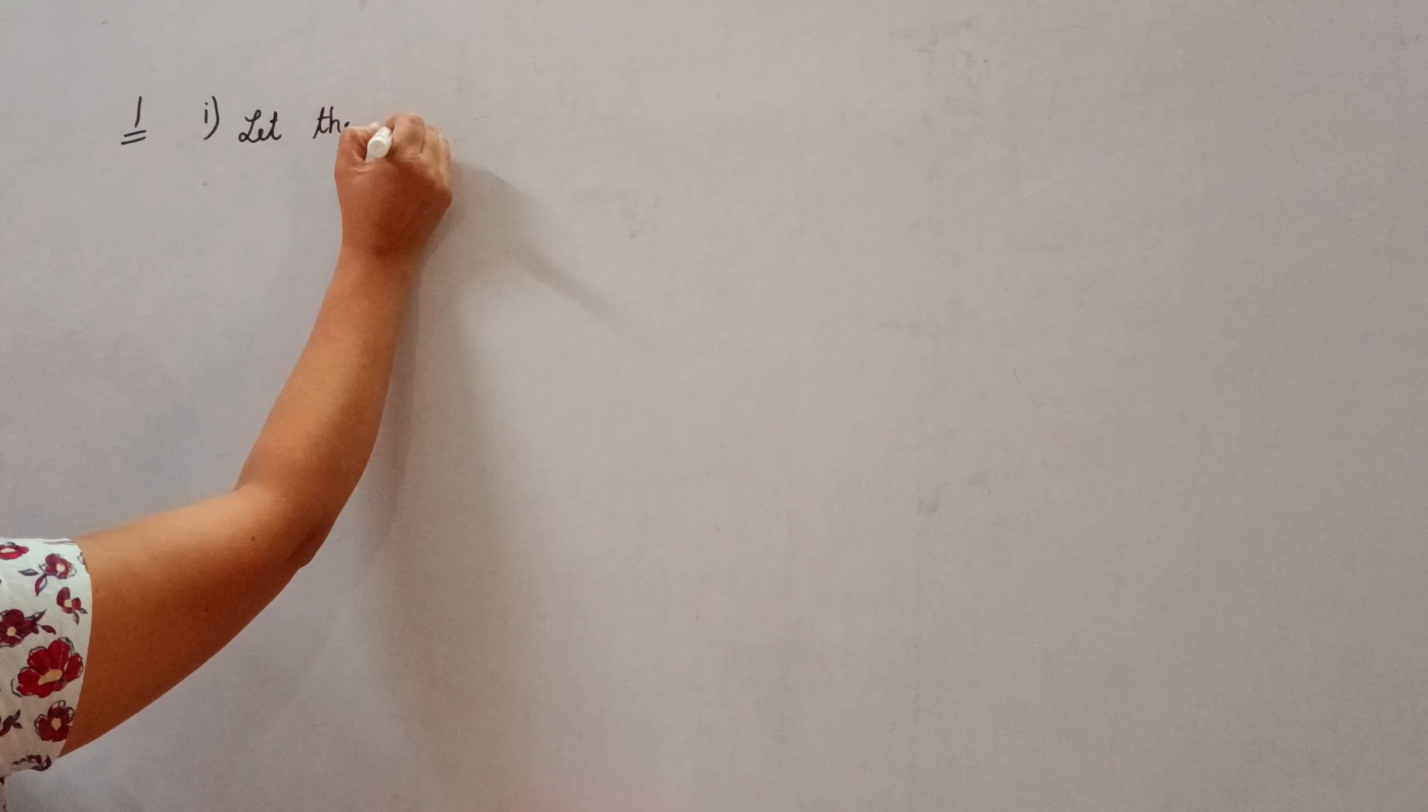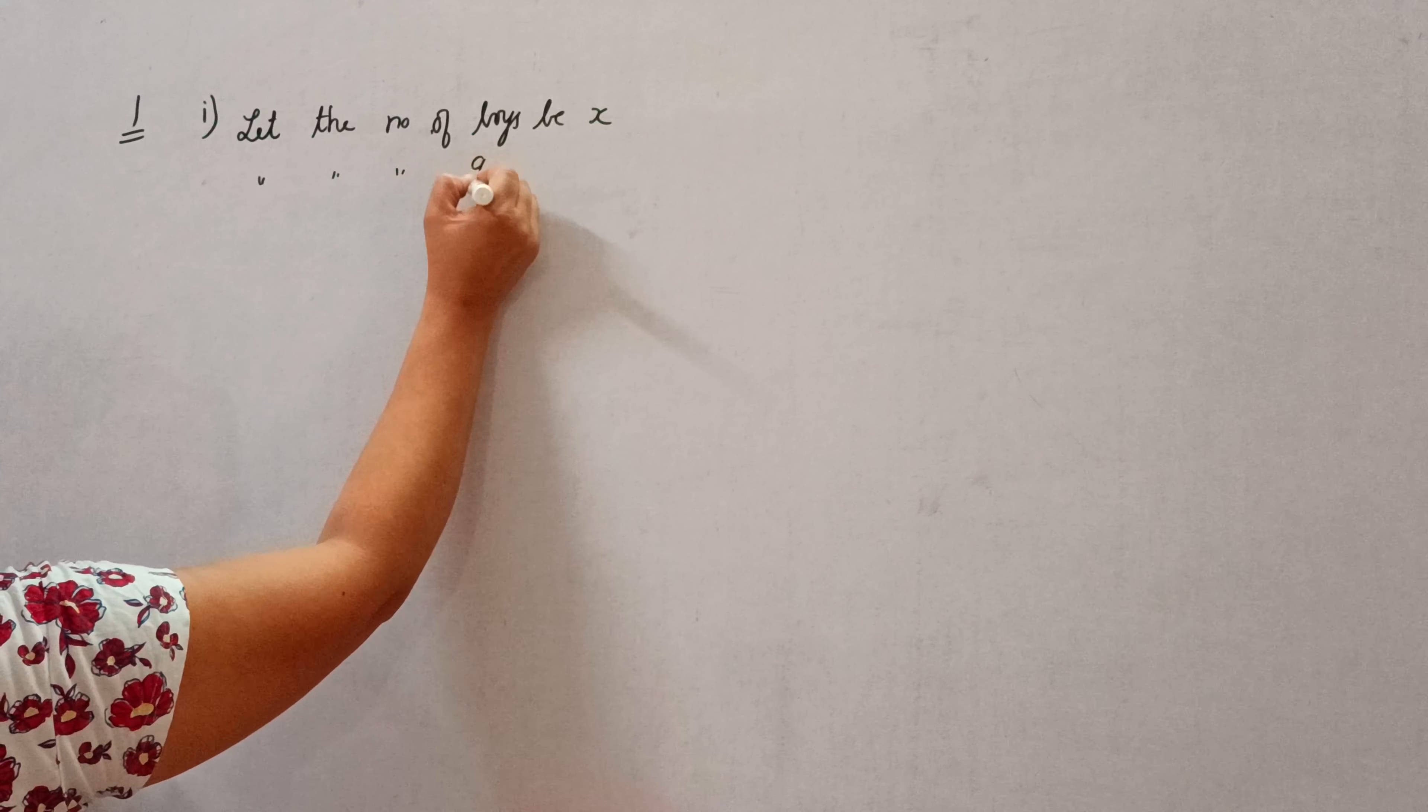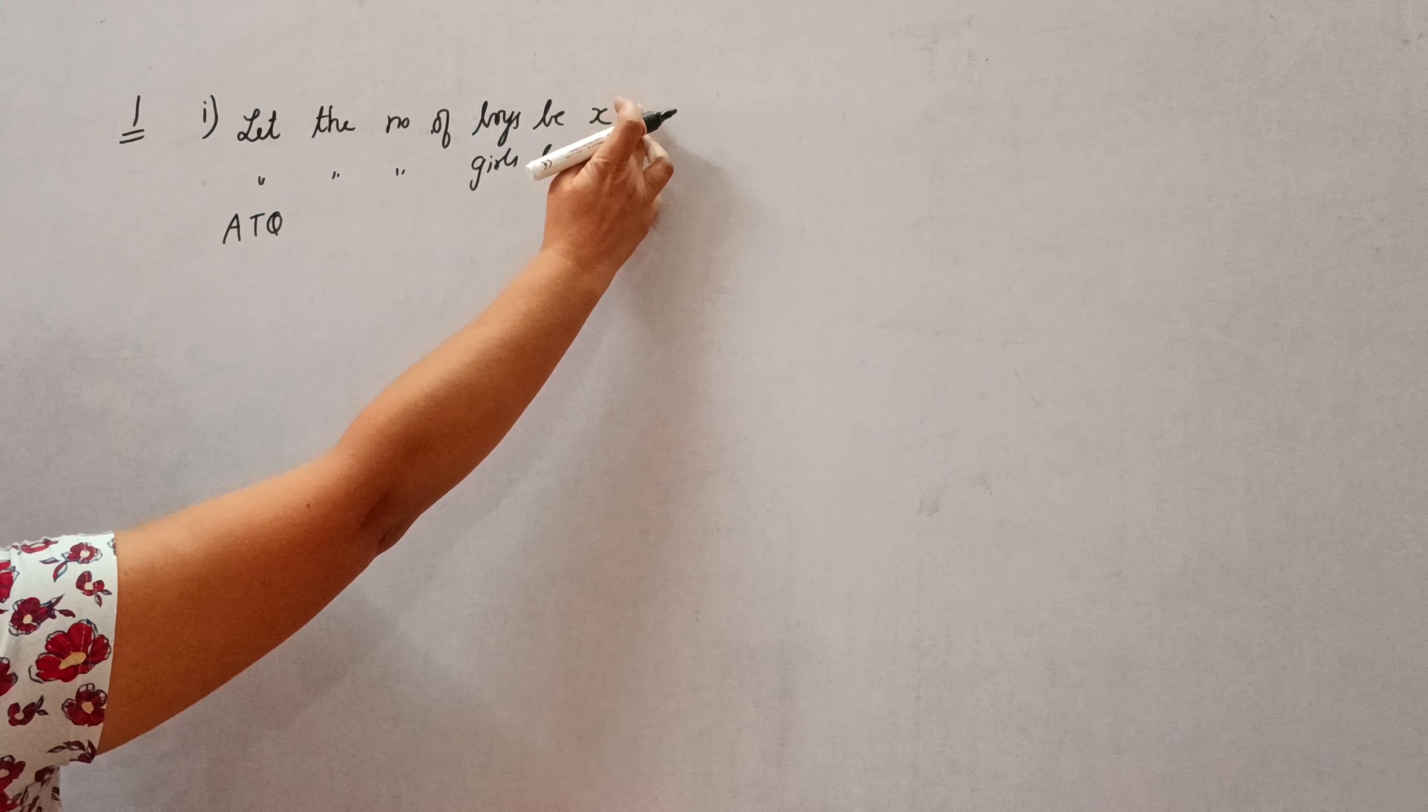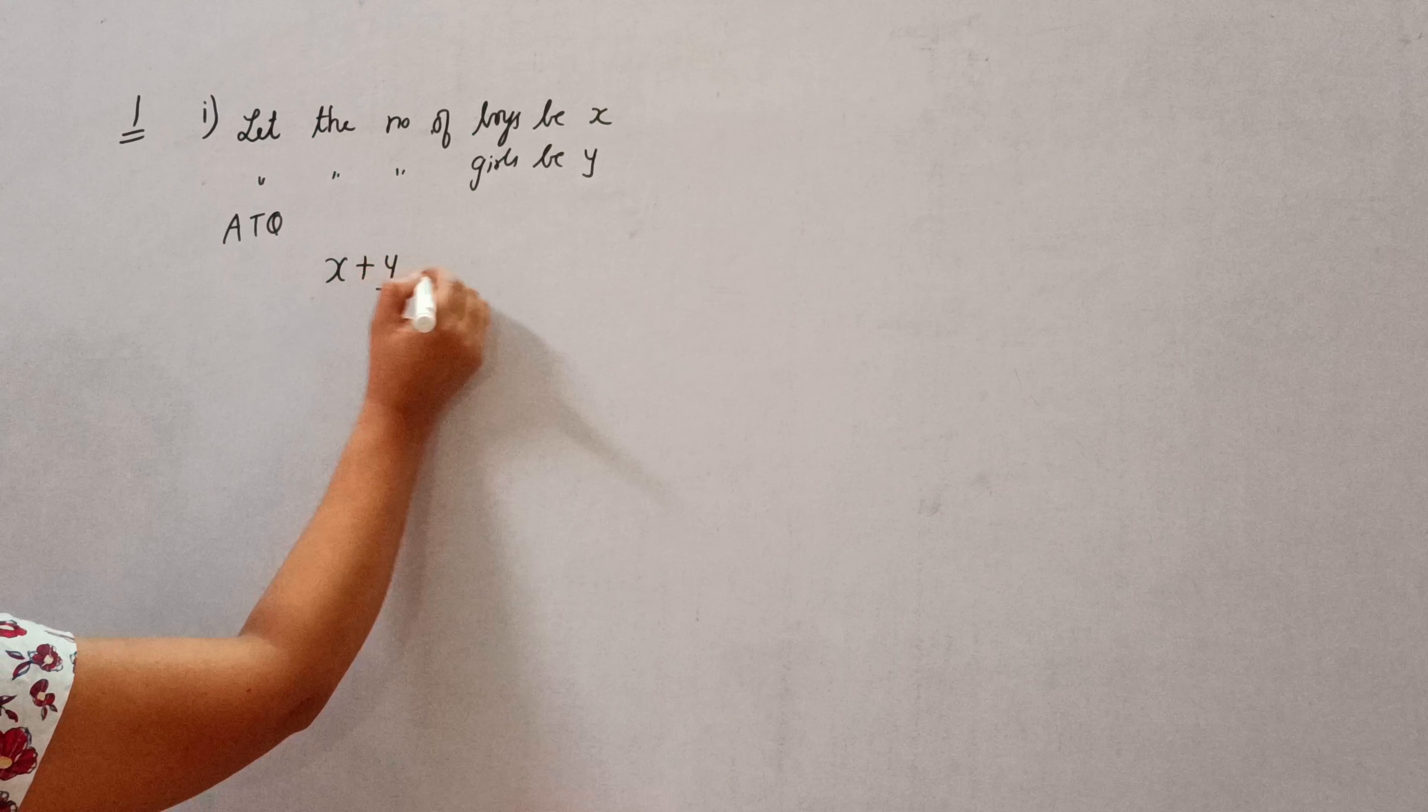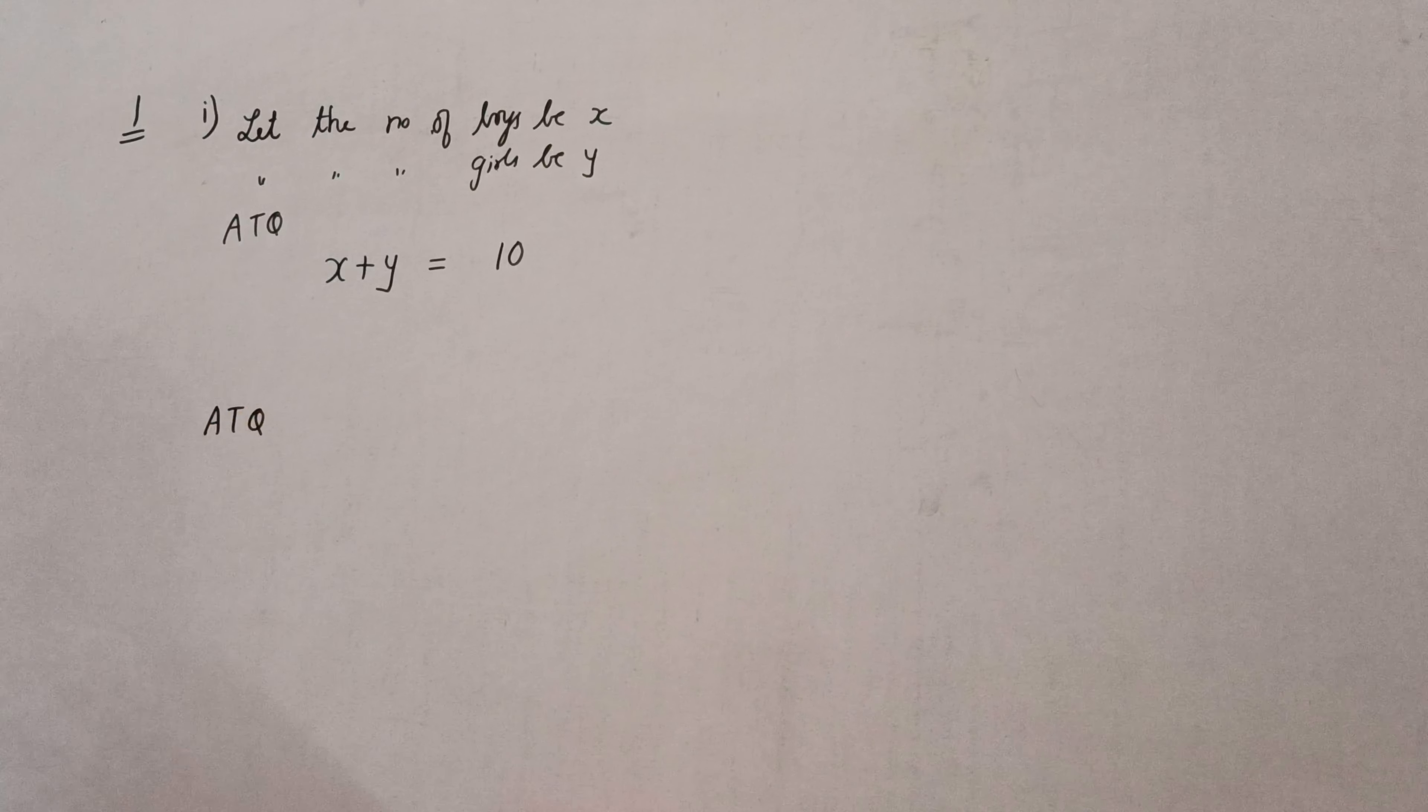So let the number of boys be x and the number of girls be y. Now according to question, see 10 students of class 10th are participating means total number of boys and girls is 10. So first equation will become x plus y is equal to 10.